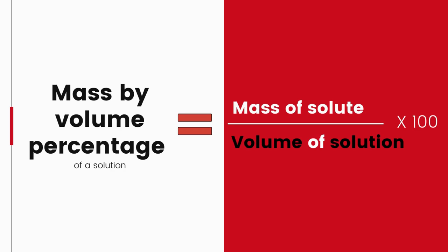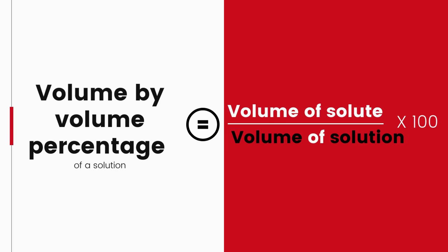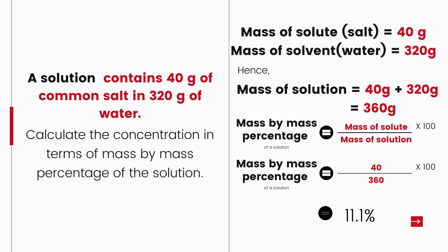Mass-by-volume percentage is the mass of solute divided by the volume of solution, times 100. Volume-by-volume percentage is the volume of solute divided by the volume of solution, times 100. For example, a solution containing 40 g of common salt dissolved in 320 g of water: the concentration as mass-by-mass percentage = mass of solute (40 g) ÷ mass of solution (40 + 320 = 360 g) × 100. Pretty simple!